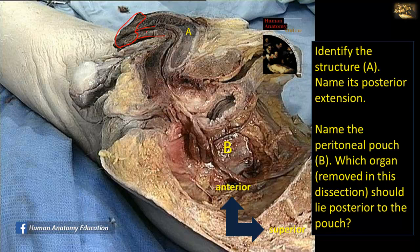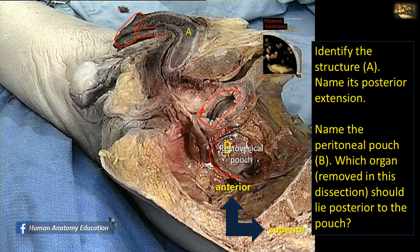The glans is not part of the corpus cavernosum; it is the anterior distension of the corpus spongiosum. Name the peritoneal pouch at B. To be oriented, this is the urinary bladder. Behind the urinary bladder there is a peritoneal pouch. The organ that has been removed here is the rectum, so the pouch extends between the anterior surface of the rectum and the posterior and superior surfaces of the bladder. This is called the rectovesical pouch.